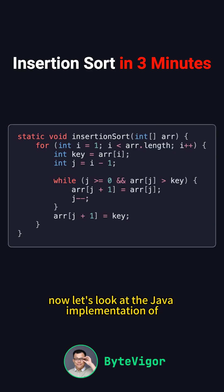Now let's look at the Java implementation of Insertion Sort. In the Insertion Sort function, we use a variable called key to hold the element we want to insert. Then, we use a while loop to compare this element with the elements on its left.